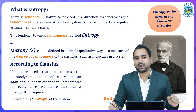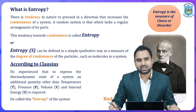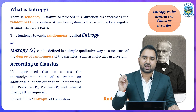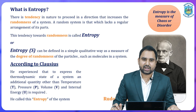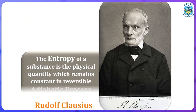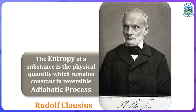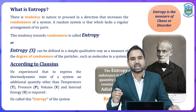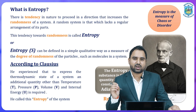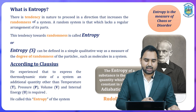Entropy is denoted by capital S. Wherever you encounter this symbol in thermodynamics, it relates to entropy — the degree of disorder. There is one more important statement given by Clausius: the entropy of a substance is the physical quantity which remains constant in a reversible adiabatic process. Adiabatic means there is no interaction of energy with the outside world; the energy is confined within the system, meaning there is no transfer of heat.